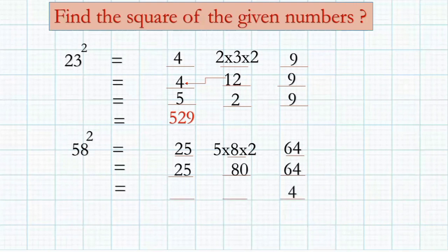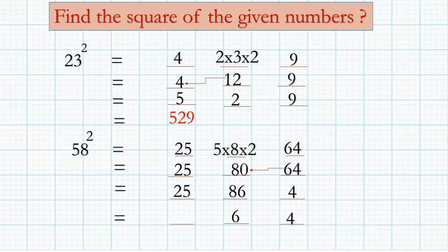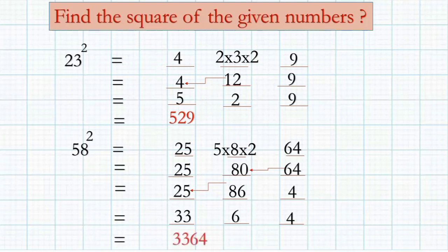Again, only the ones place digit you should write down and carry six forward to the next — add 80 and 6, that is 86. First is 25 — write down the ones place digit 6, carry 8 forward, then 25 plus 8 is 33. So the answer is 3364. With one or two steps you can reduce; if you practice more you can do it faster.